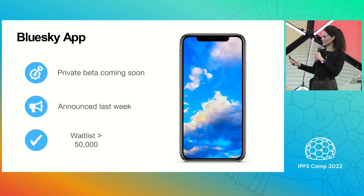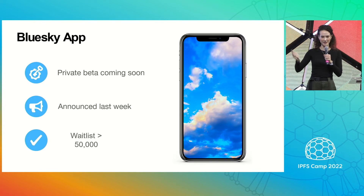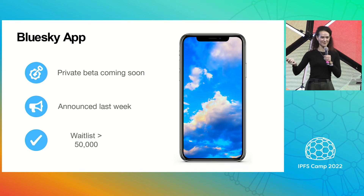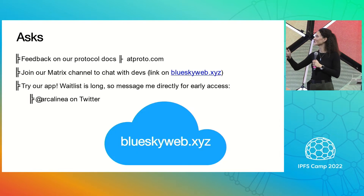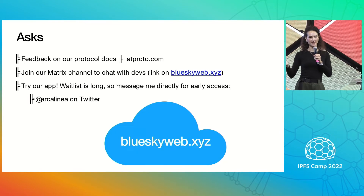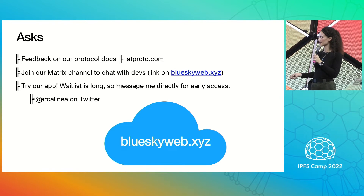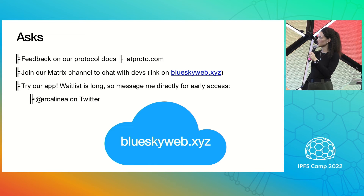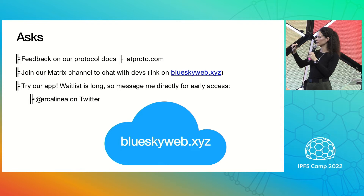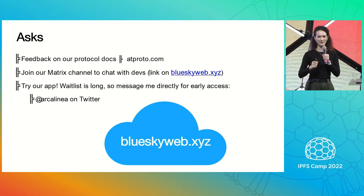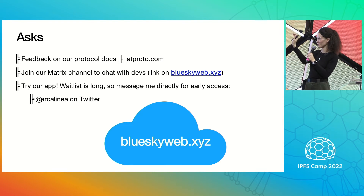The Blue Sky app is coming soon. We announced last week that we are doing a private beta, and the waitlist quickly filled up and is now over 50,000, so we're going to break those up into smaller groups. We don't have any specific asks on the IPFS side because IPLD is working well for us. But if you'd like to get feedback on our protocol docs, you can do that at atproto.com. You can join our Matrix channel at blueskyweb.xyz, and if you want to try our app, you can message me directly on Twitter to get in earlier than number 50,000.